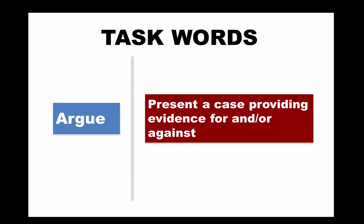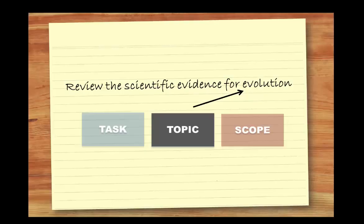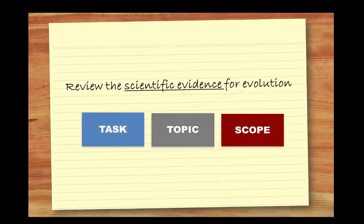Now let's look at the topic and scope of the question more closely. The topic is usually the easiest thing to spot, which makes it tempting to start the assignment without checking what the question is really asking you to do. To avoid getting off track, look at the topic and scope of the assignment together. This way you can see the limits of the assignment and start planning the best way to approach it.